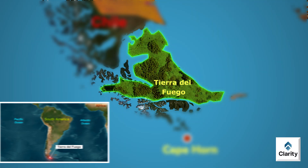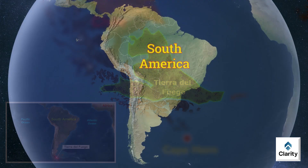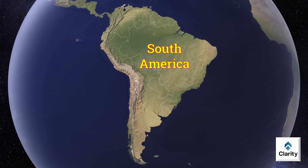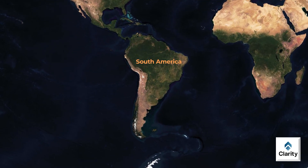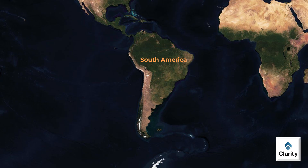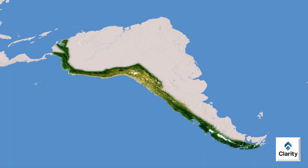We covered till Tierra del Fuego in the last video. Now we will continue from here. But before we proceed, let us understand one common feature that runs across South America. Throughout South America, the world's longest mountain chain runs along the western coast. These mountains are known as the Andes.